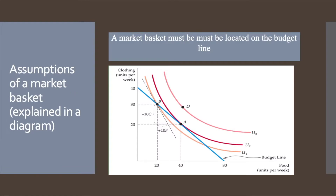The first condition a market basket must satisfy is that it must be located on the budget line. The market basket, or the amount of goods purchased by the consumer, cannot be located outside the budget line as the consumer won't be able to afford it. We assume that all income is spent, meaning there are no savings, so the bundle of goods consumed must exactly lie on the budget line — at a point such as A or B in the figure.